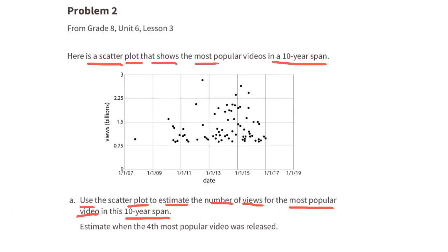Problem number two from eighth grade, Unit 6, Lesson 3. Here's a scatter plot that shows the most popular videos in a 10-year span. A. Use the scatter plot to estimate the number of views for the most popular video in this 10-year span. To find the most popular video, we'd have to find the video that has the most views. The vertical axis represents the views in billions. Let's find the point that's at the highest part of the graph. That's not quite 3 billion views. It's just about 2.8 billion views.